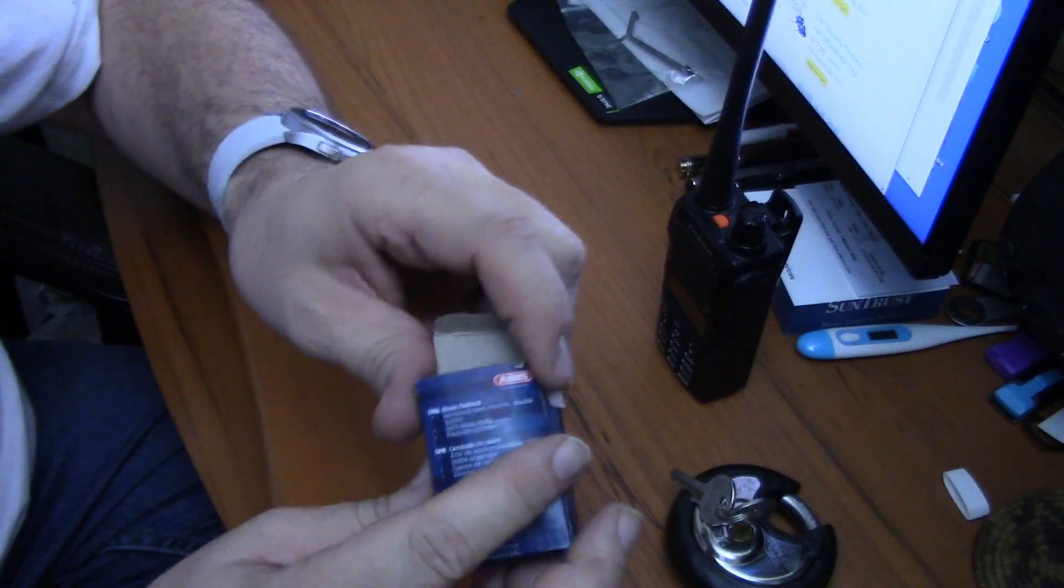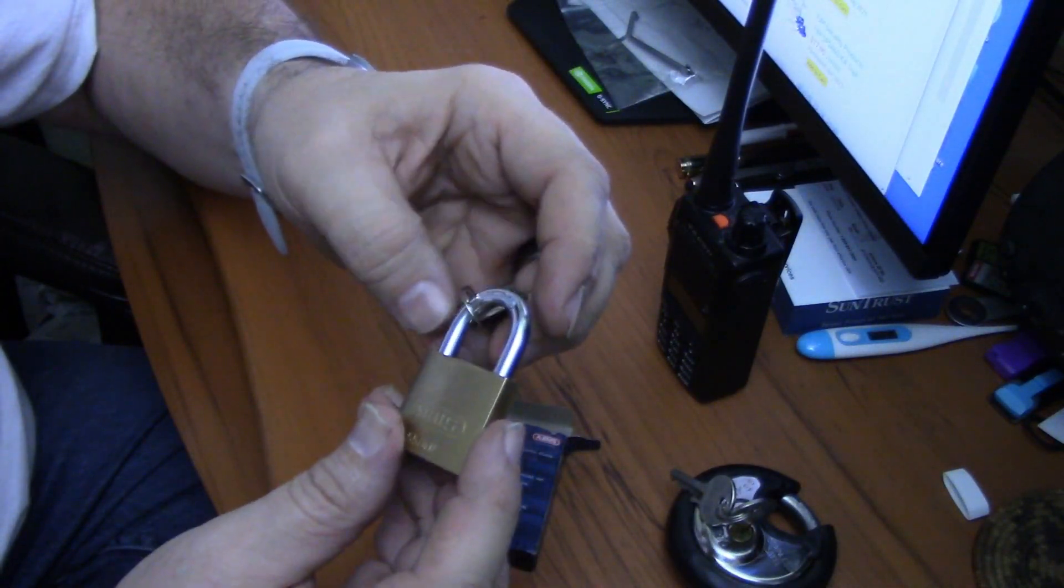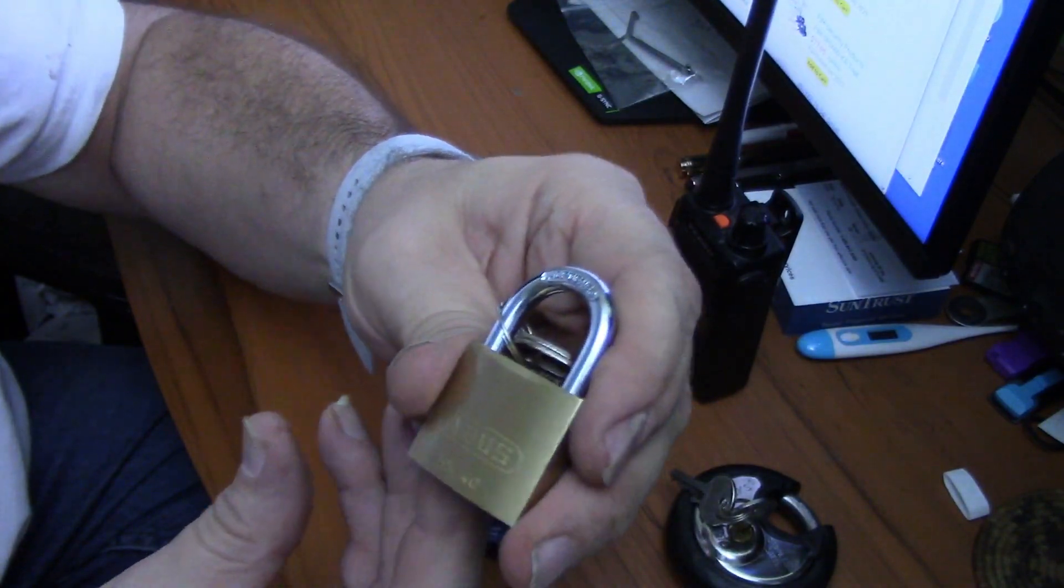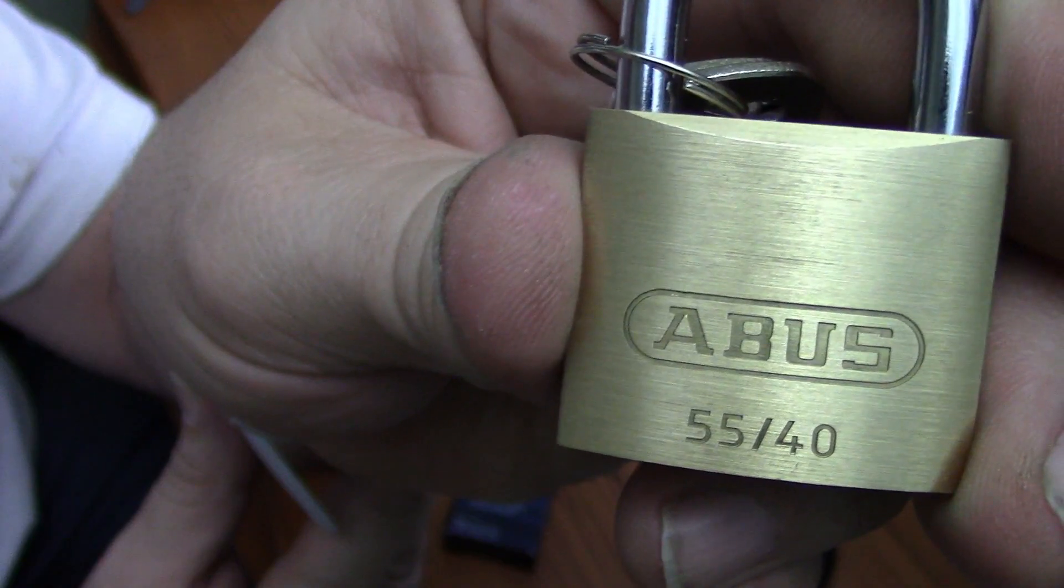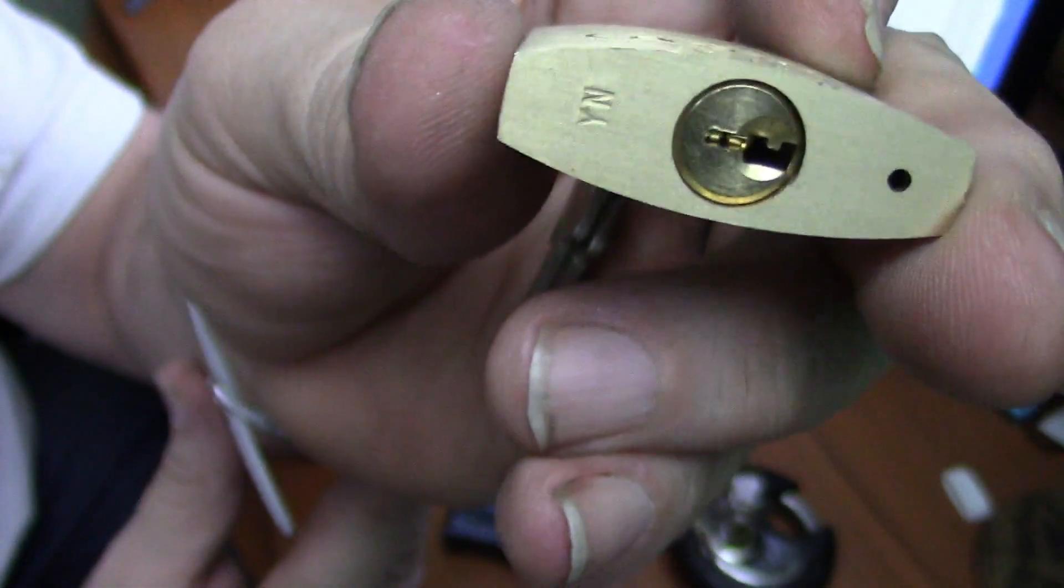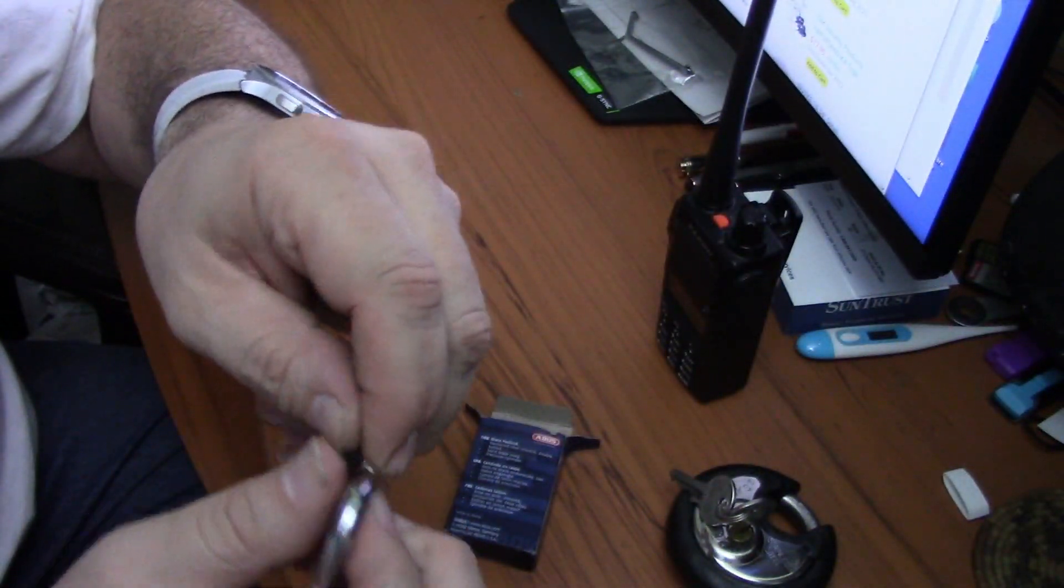A lot smaller than I thought it would be. It looks to be a bigger lock on the Amazon website. You can see Abus 5540 right on the lock. Take a look at the keyway - brass keyway. It is a four pin lock.